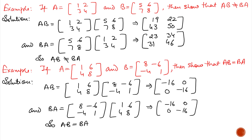Always remember that AB equals BA is only possible when B is the adjoint of A. Otherwise AB is not equal to BA.